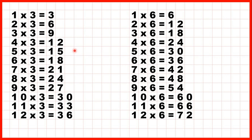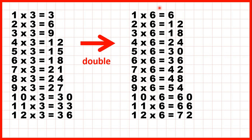Now to see the connection, here we have our 3 times table and our 6 times table written out. If we double what's in the 3 times table we get what's in the 6 times table. Remember we double by adding a number to itself or multiplying by 2. So 3 times 2 is 6, 6 times 2 is 12, 9 times 2 is 18, and so on.